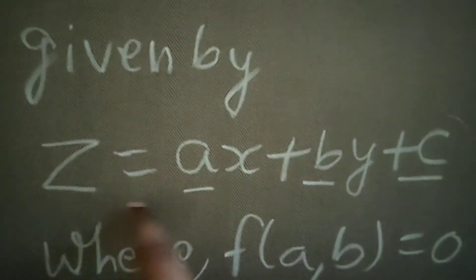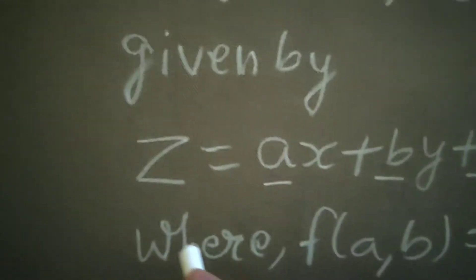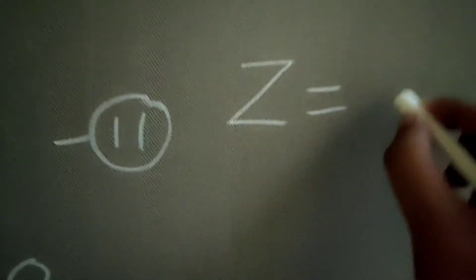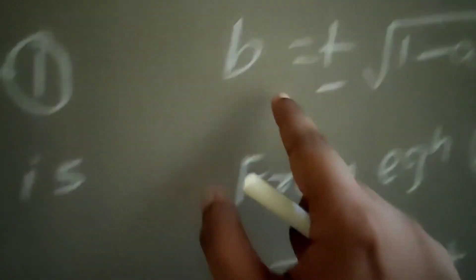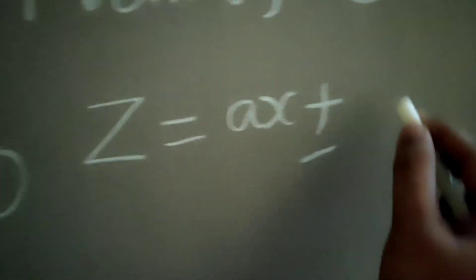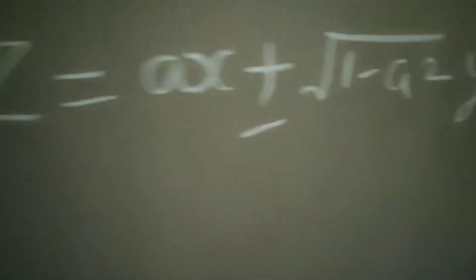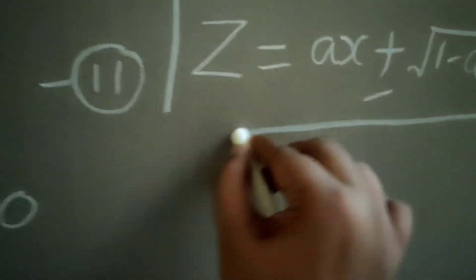Once you have written b in terms of a, come back to equation number two. So your z is: z = ax + by + c, where b = ±√(1 − a²), giving z = ax ± √(1 − a²) · y + c. This is your final solution.